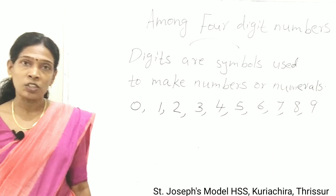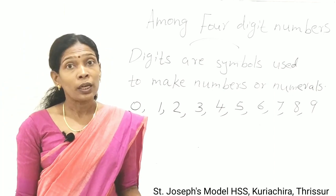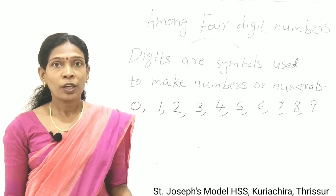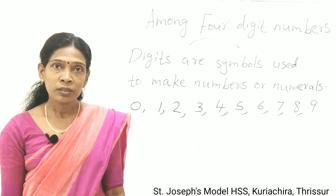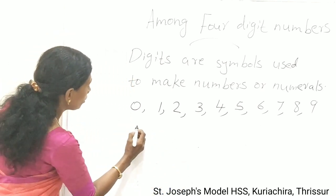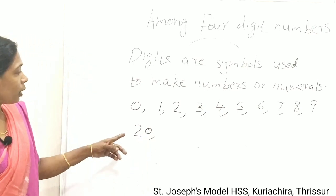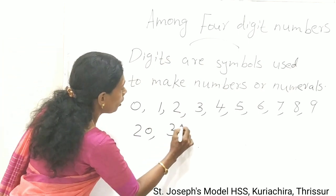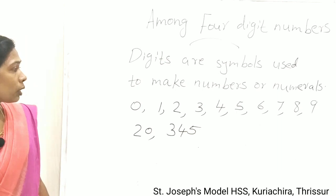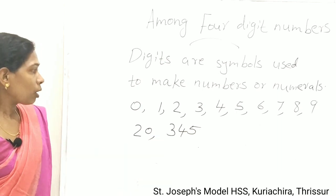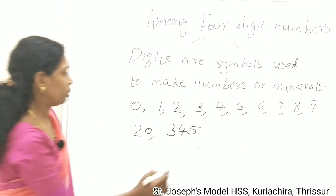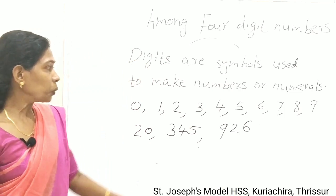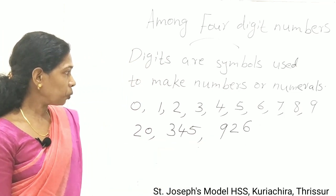Now using these digits we can make any number — one digit, two digit, three digit, four digit, and so on. For example, 20 uses the digits 2 and 0. Then 345 uses the digits 3, 4 and 5. Then 926 uses the digits 9, 2 and 6.